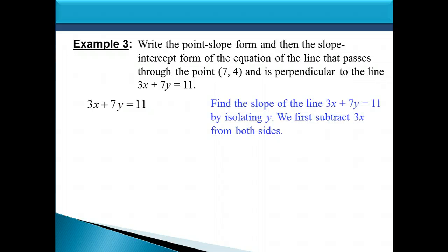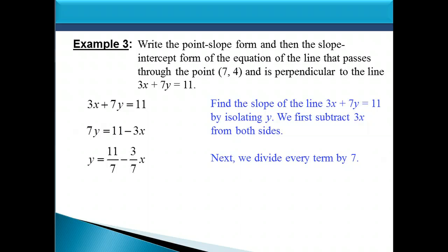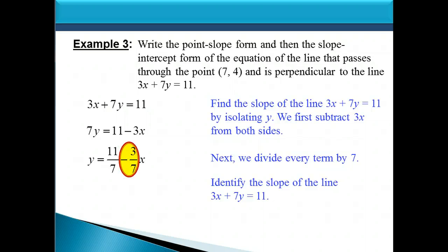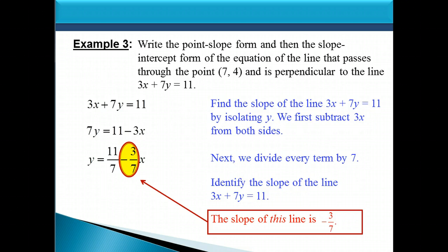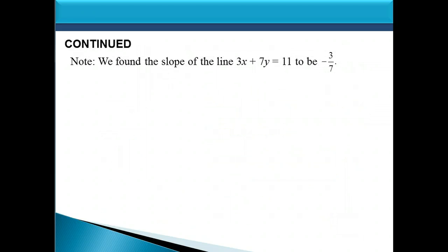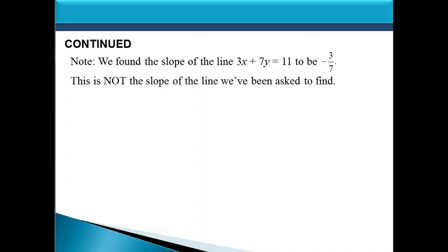We first find the slope of the line 3x plus 7y equals 11 by subtracting 3x from both sides and then dividing everything by 7. Now we can identify the slope — it's the coefficient on x, which is negative 3 sevenths. So the slope of the line 3x plus 7y equals 11 is negative 3 sevenths. Note that this is the slope of the given line, not the slope of the line we've been asked to find.